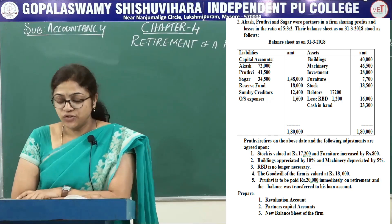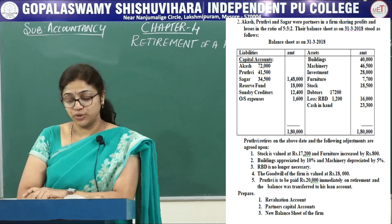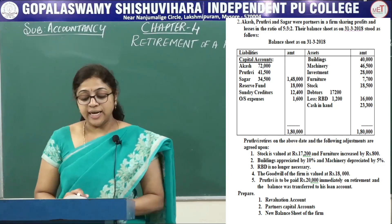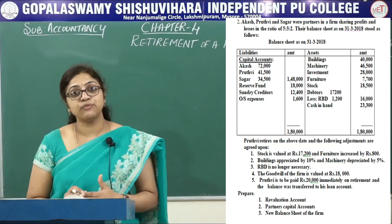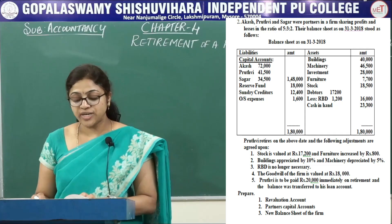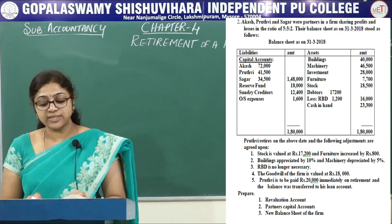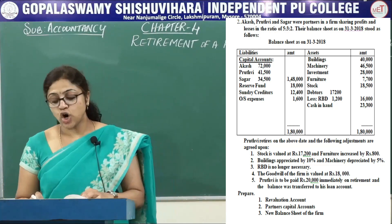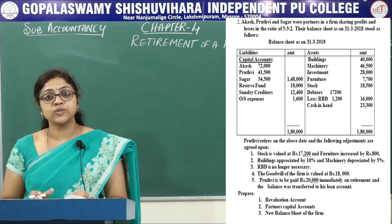Let's get started. In this question, Akash, Prithvi, and Sagar are partners sharing profits in the ratio of 5:3:2. On 31st March 2018 their balance sheet is given. On the liability side: Akash's capital 72,000; Prithvi's capital 41,500; Sagar's capital 34,500; reserve fund 18,000; sundry creditors 12,400; outstanding expenses 1,600.